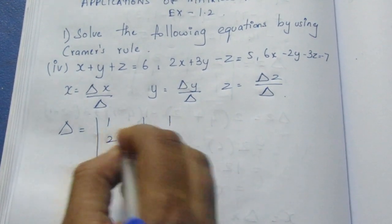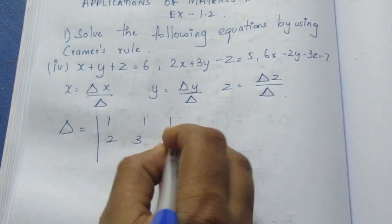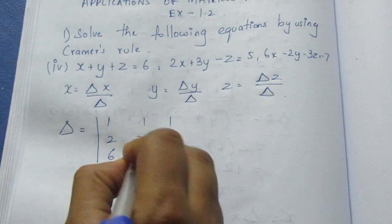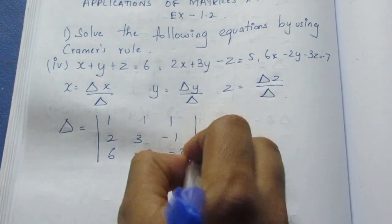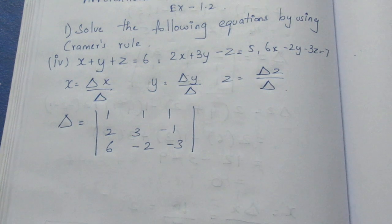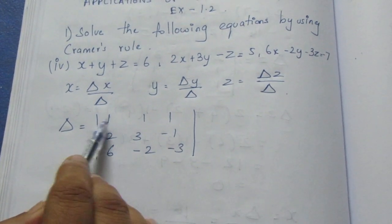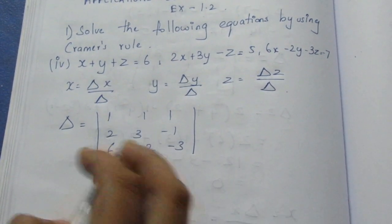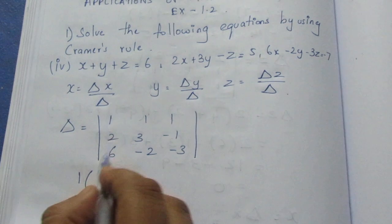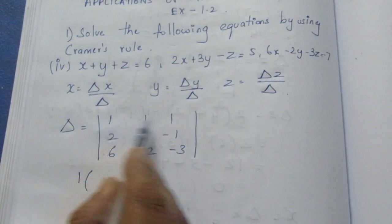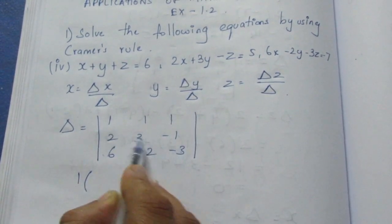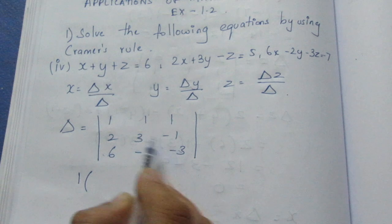The coefficient matrix entries are: 1, 1, 1 / 2, 3, -1 / 6, -2, -3. We can solve the determinant — as learned in 11th standard — by expanding along the first row, using row and column elimination and multiplying the diagonals.